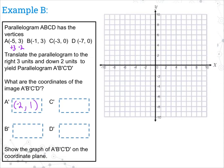For B prime, again we're adding three and subtracting two. Negative one plus three is two, and three minus two is one. For C prime, same thing — negative three plus three is zero, and zero minus two is negative two. For our final point D, negative seven plus three is negative four, and zero minus two is negative two.